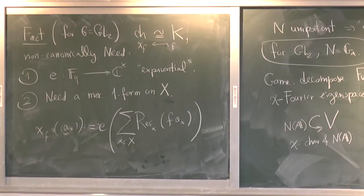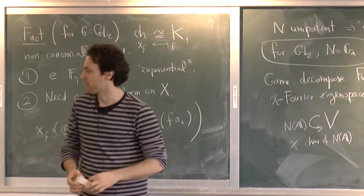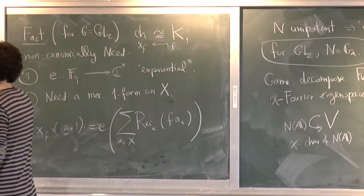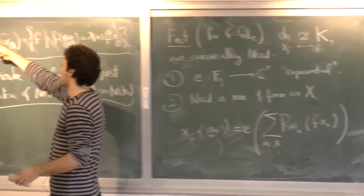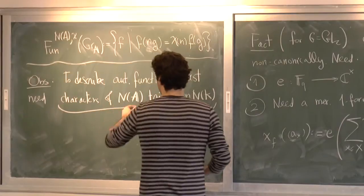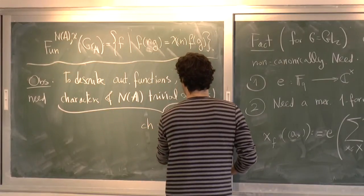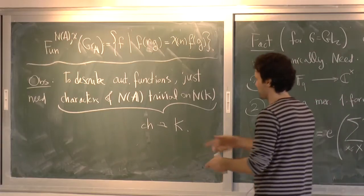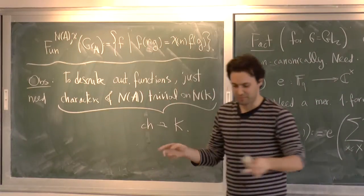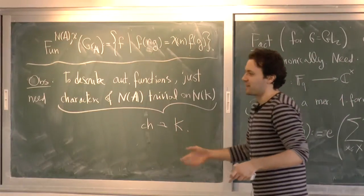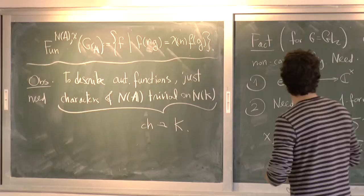So it looks like that to describe automorphic functions, I need to describe the Fourier eigenspaces for any chi. So for any chi, as I said, that's equivalent to an element of K. So in other words, to describe automorphic functions, I need to play with a keyboard with K worth of frequencies. But I just need much less, as it turns out. Yes?